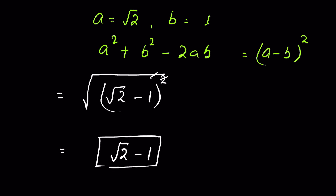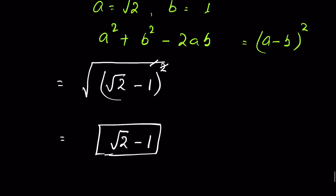We can put the value of square root of 2 to get the final answer, or if the question is asking for simplification, we can leave it as square root of 2 minus 1. How did you solve it? Let me know in the comment section. Thanks for watching.